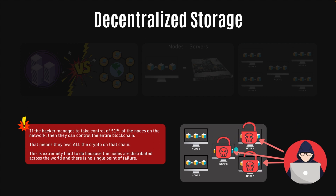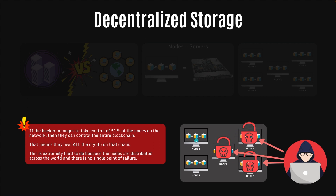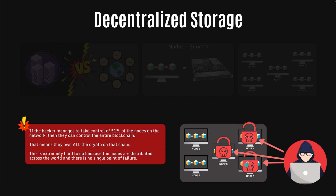This is highly unlikely because the nodes are distributed across the world and there's no single point of failure. And because it's permissionless, anyone can join. So if a hacker is able to grab hold of three out of five nodes, anyone else is able to spin up new nodes and join the network, and now that hacker doesn't own 51% anymore. In reality, it's thousands of nodes running a blockchain, so it's extremely hard to hack more than 51% of the network.